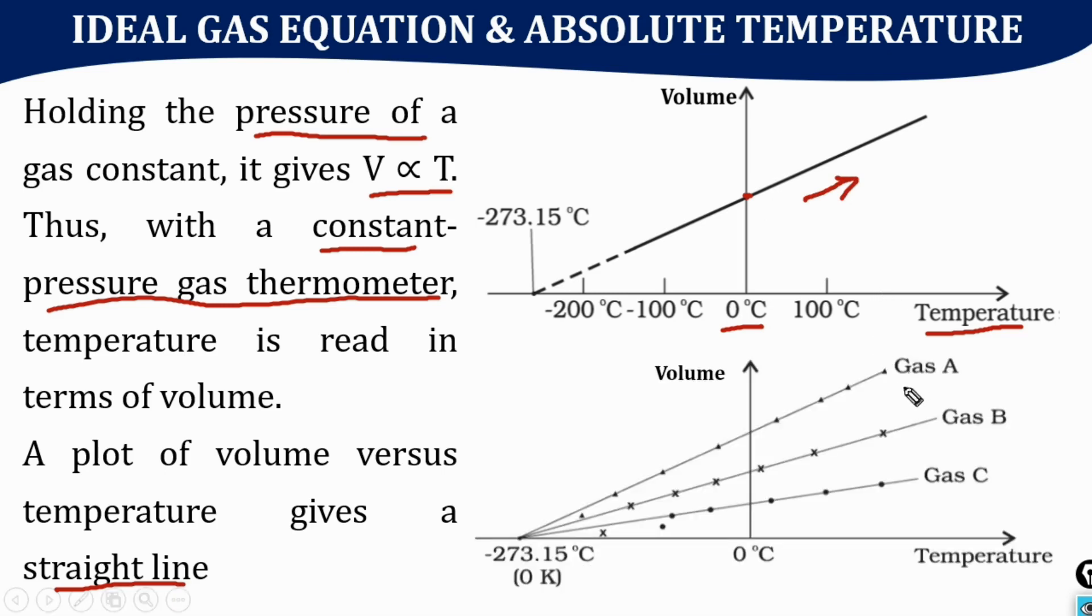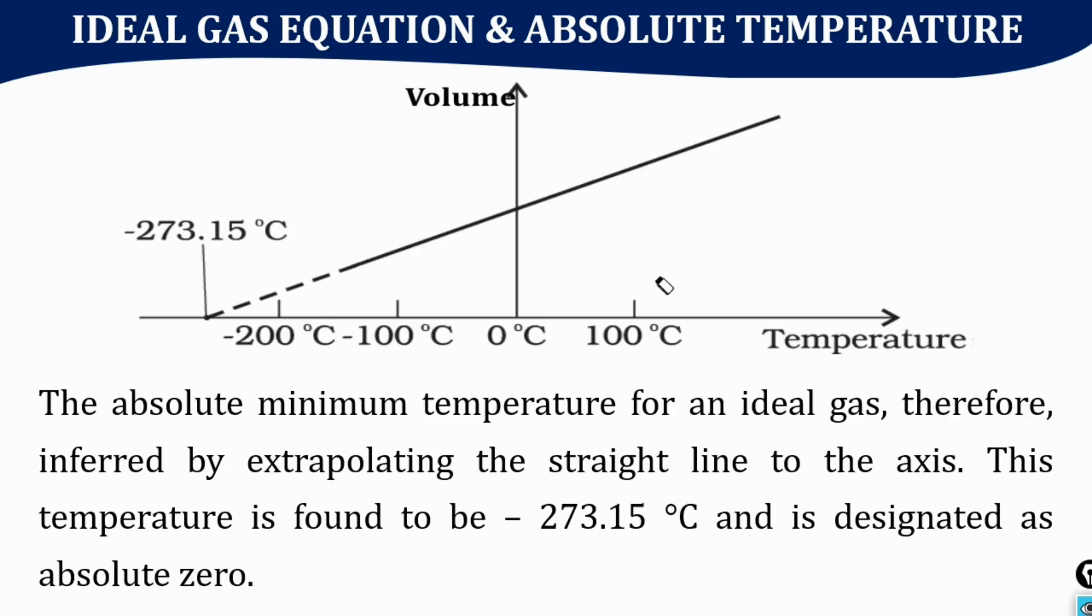For any gas at low density, whether it may be gas A, B, or C, the same characteristic is seen. When we extrapolate the graph, different gases will be meeting at the same point.